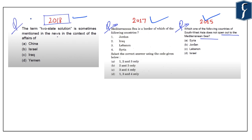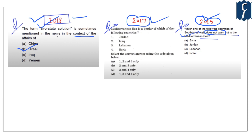In 2018, a question was directly related to the two-state solution proposed to the Israel-Palestine issue, which is sometimes mentioned in the news in the context of the affairs of Israel. The question asked in 2017 was: which one of the following countries of South-West Asia does not open out to the Mediterranean Sea? As we have seen in the map, Jordan does not open up into the Mediterranean Sea, so the correct answer was B. Another question asked which countries border the Mediterranean Sea, and as we saw in the map, Jordan and Iraq do not share their border with the Mediterranean Sea — hence the correct answer is Lebanon and Syria, that is options three and four only.